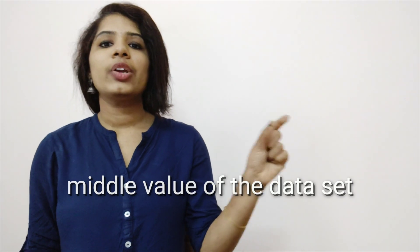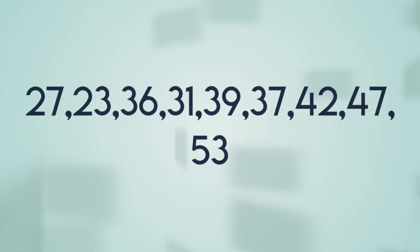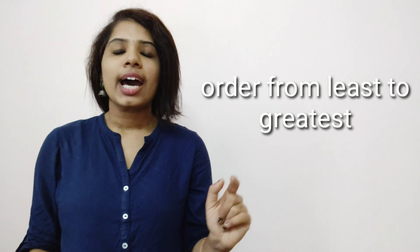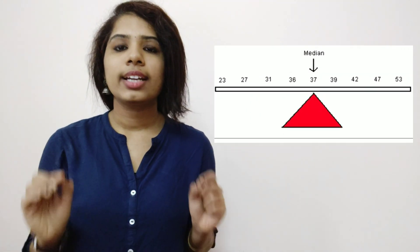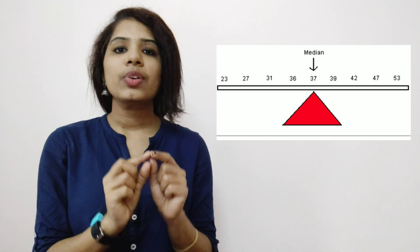Median means the mid value of the data. Taking another example: students in a quiz competition scored 27, 23, 36, 31, 39, 37, 47, 42, and 53. To find the median, first arrange the data from least to greatest: 23, 27, 31, 36, 37, 39, 42, 47, 53. The middle value is 37, so the median is 37. This is for an odd number of values.